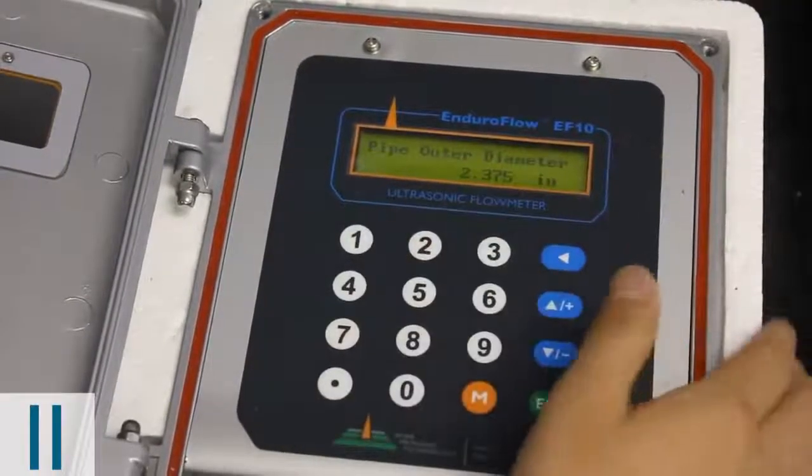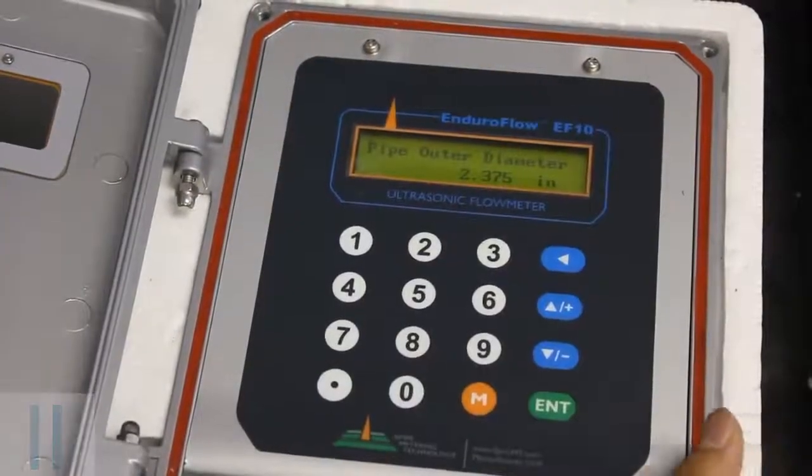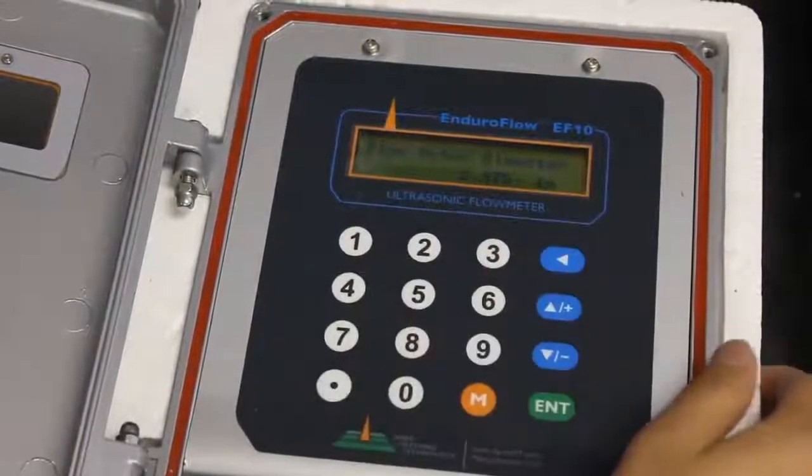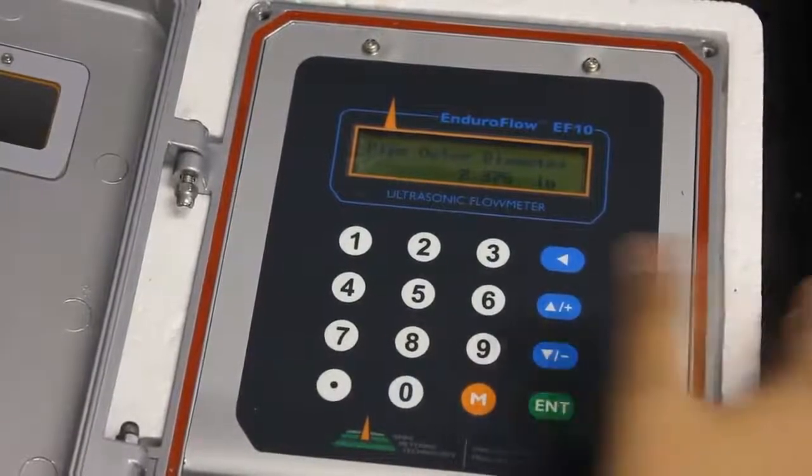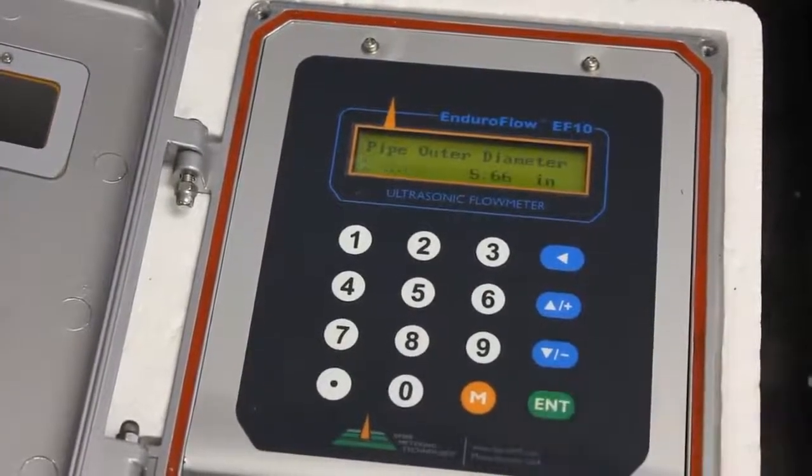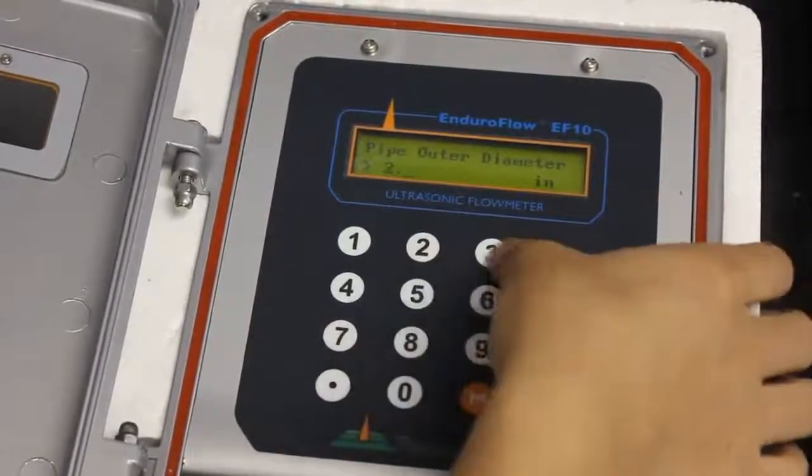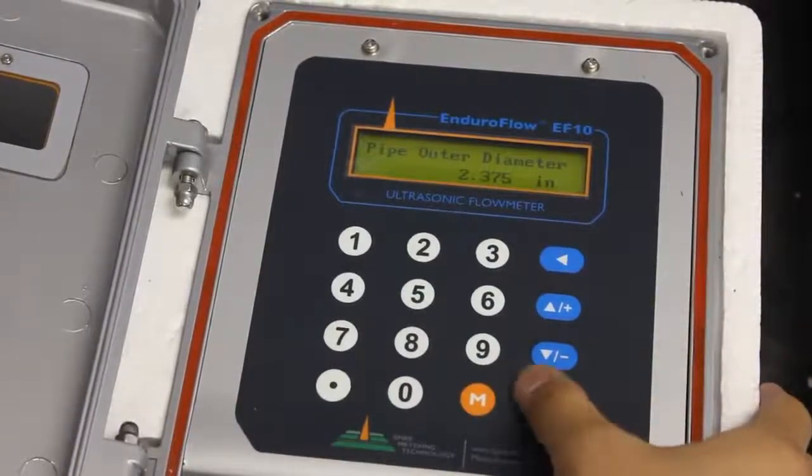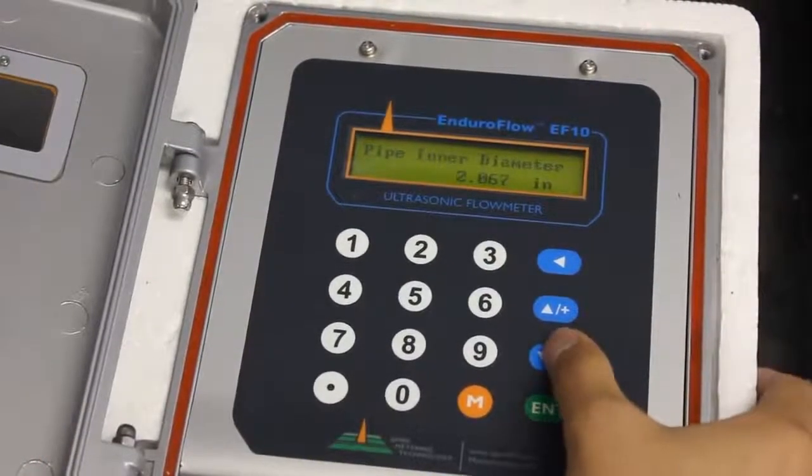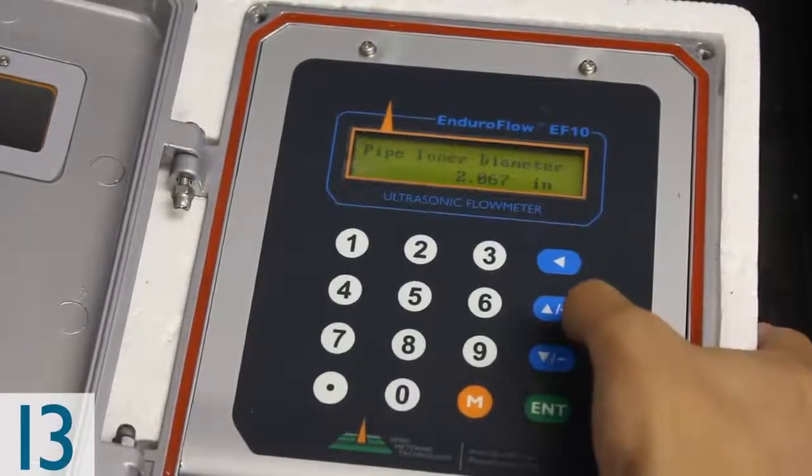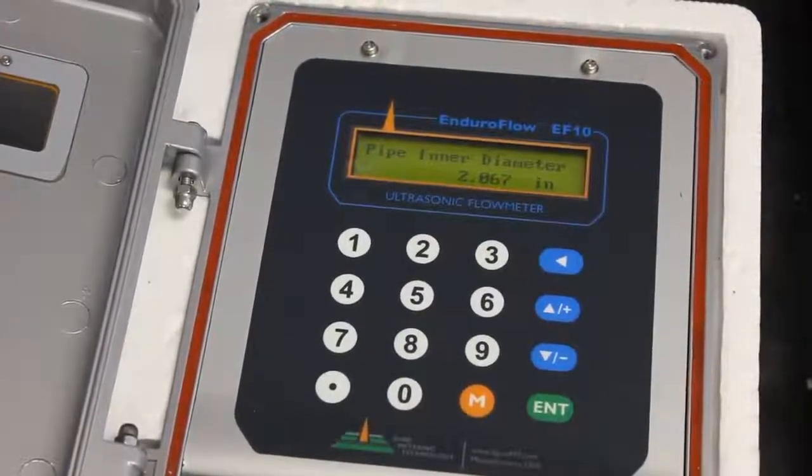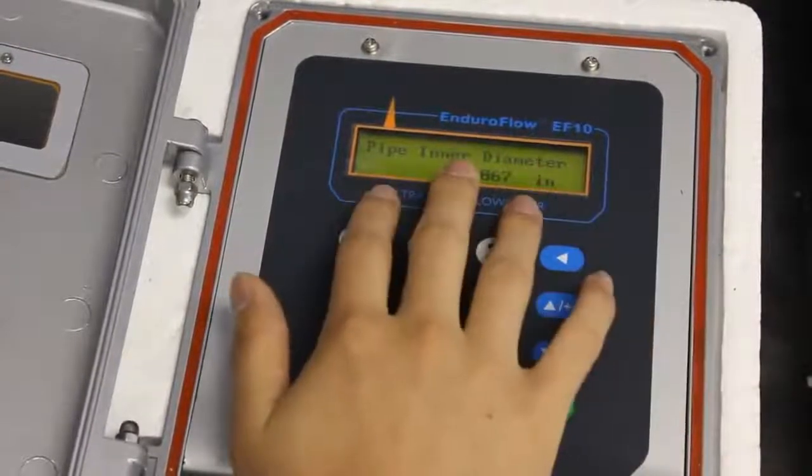Now we go to menu 11 and this is the part where we set up the pipe parameters. Menu 11 is the pipe outer diameter. Make sure you know this. Today we're using 2.375 inches. Say we were using 5, you just press enter, 5. Say it was 5.6, 6, enter. But we're using 2.375. Next we go to menu 12 to set the pipe thickness, 0.154. Next is menu 13. You can scroll between menus by up and down here, by these arrows. Menu 13, the inner diameter is automatically calculated based on your outer diameter and your wall thickness. So you don't actually need to enter anything here.